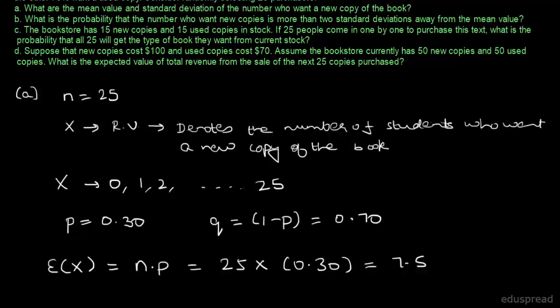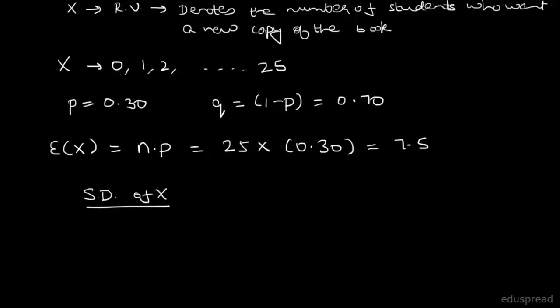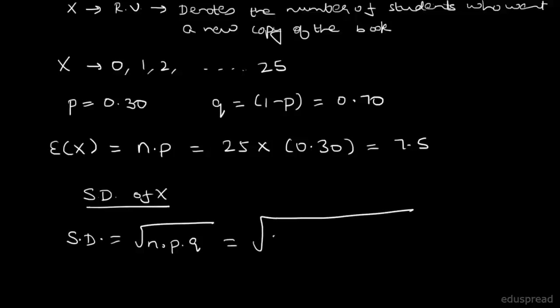Now let's find the standard deviation of x. The standard deviation of x equals the square root of n multiplied by P multiplied by Q. With n equal to 25, P equal to 0.30, and Q equal to 0.70, solving this we get 2.29. So this is the standard deviation of x, and that's all for part A.